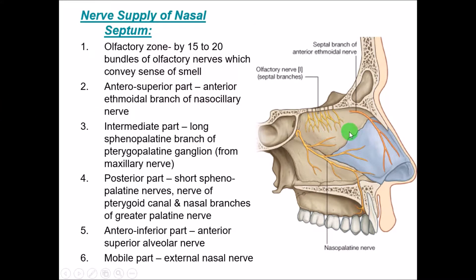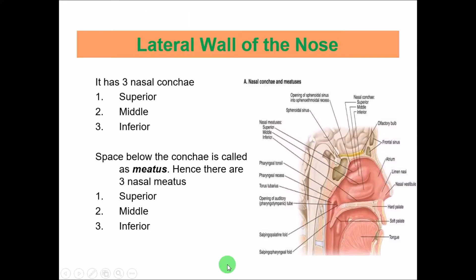Coming to the nerve supply: the roof of the nose is supplied mainly by 15 to 21 bundles of the olfactory nerves, which are responsible for the sensation of smell. The anterior part is supplied by the anterior ethmoidal branch of the nasociliary nerve. The intermediate part by the sphenopalatine branch of the pterygopalatine ganglion. The posterior part by the short sphenopalatine nerves, nerves of the pterygoid canal, and nasal branches. The inferior part by the anterior superior alveolar nerve, and the mobile part by the external nasal nerves.